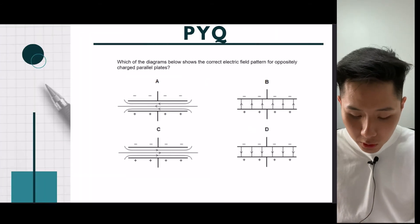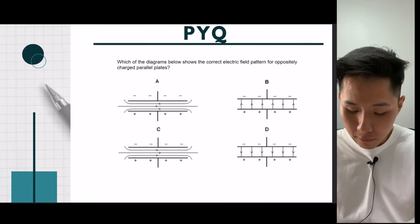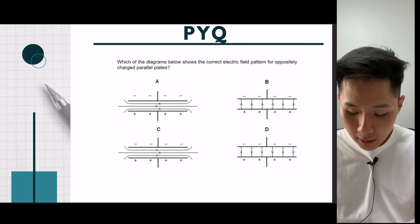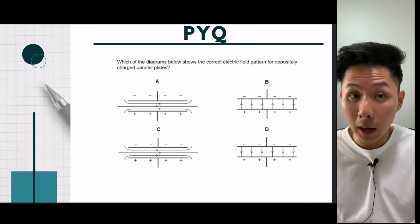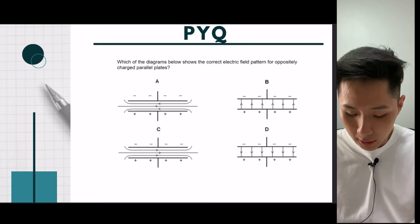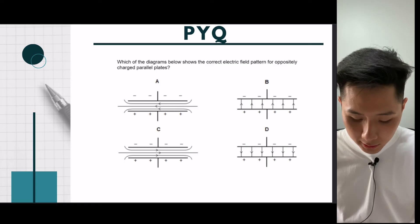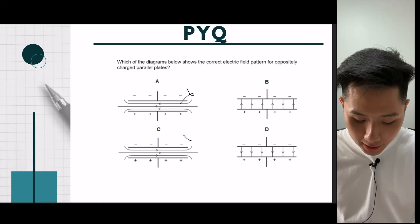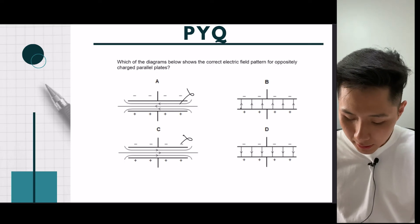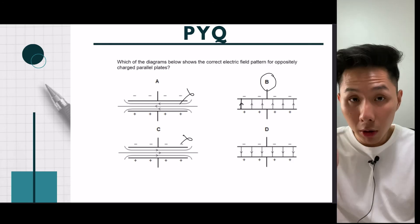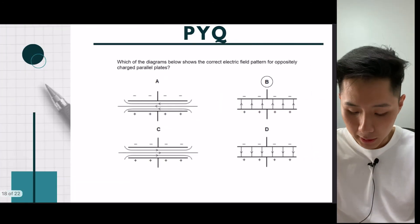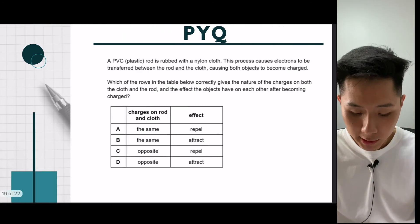Next: which of the diagrams below shows the correct electric field pattern? We know that the lines of force will come out from the positive plate to the negative plate. So it's not like option A, it's not like option C — it's more like option B, where the lines go from the positive plate all the way to the negative plate. So our answer is B.